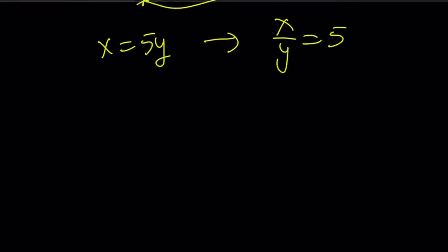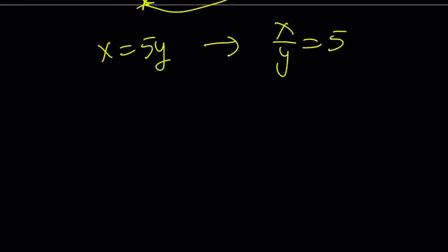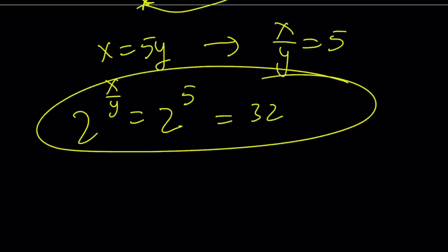Awesome. From a ratio or proportion, we found another ratio. So now, 2 to the power x over y is just going to be 2 to the power 5, and that is equal to 32.